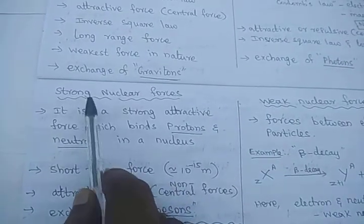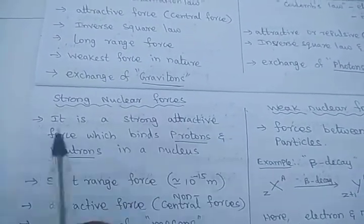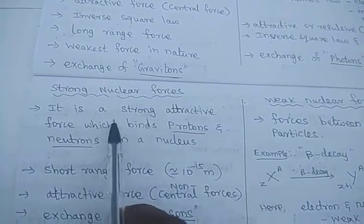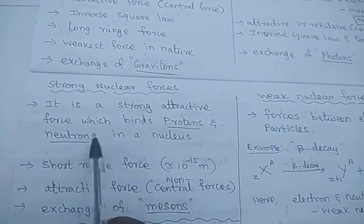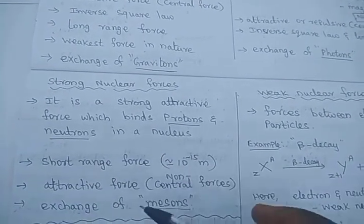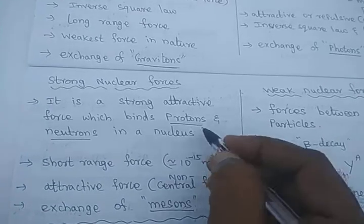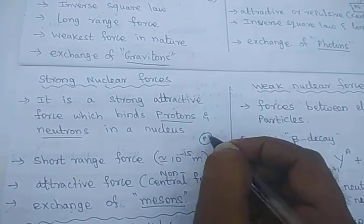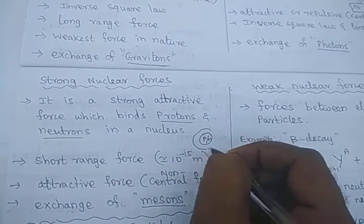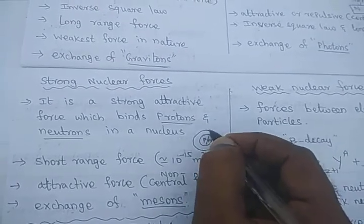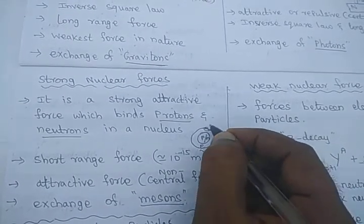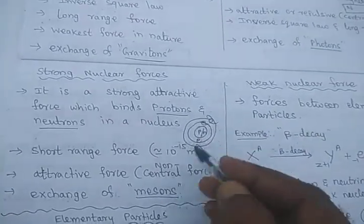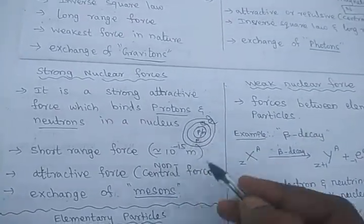The third force is the strong nuclear force. It is a strong attractive force which binds the proton and neutron in the nucleus. Inside the nucleus, we already know that atoms consist of the nucleus, which contains protons and neutrons, and electrons are revolving around it in the outer orbit.